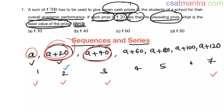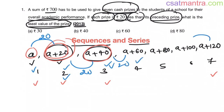The difference between the second term and first term — A plus 20 minus A — is 20. Third term minus second term: A plus 40 minus A plus 20 is also 20. Similarly, the difference between the fourth and third term is 20, and the seventh minus sixth term is also 20. Since the difference between two consecutive terms is the same, we call this an arithmetic series. That constant difference is called the common difference, represented by D. Here D equals 20.